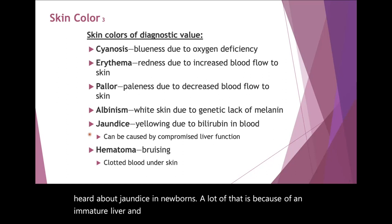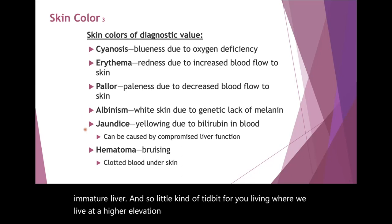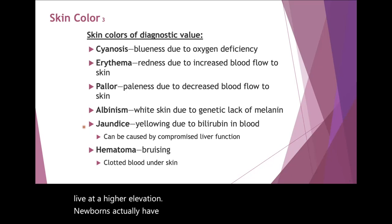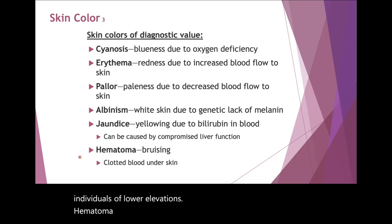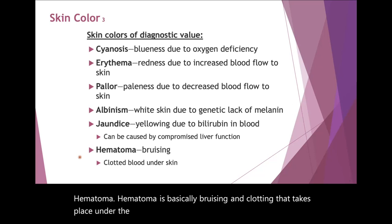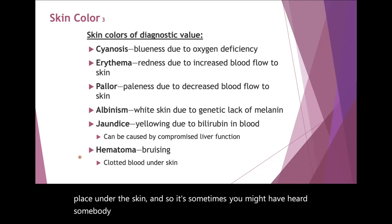A little tidbit: living at a higher elevation, newborns actually have higher incidence of jaundice than individuals at lower elevations. Hematoma is basically bruising and clotting that takes place under the skin — sometimes you might have heard it called a blood blister.